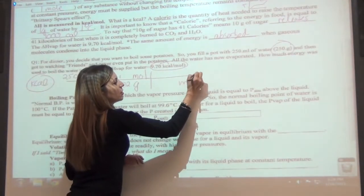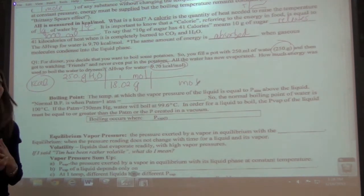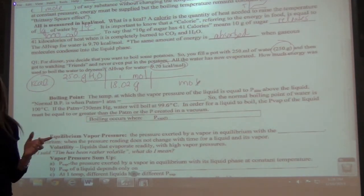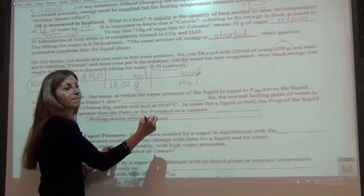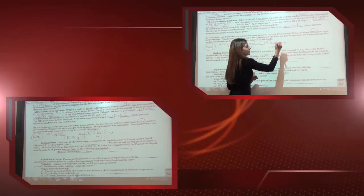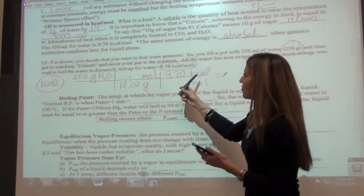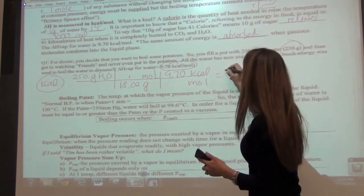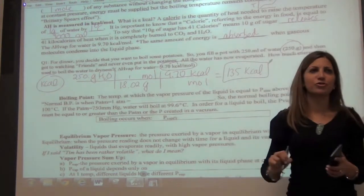And now I'm in moles. So now what can I use? Moles. Moles to grams. And so how do I, or moles to what? Kilocalories. And how do I go moles to kilocalories? One mole, 9.70. Awesome. So we're going to multiply and divide this. I get 134.57. Three, four, three sig figs. So we're going to go 135 kcals is how much energy it took.